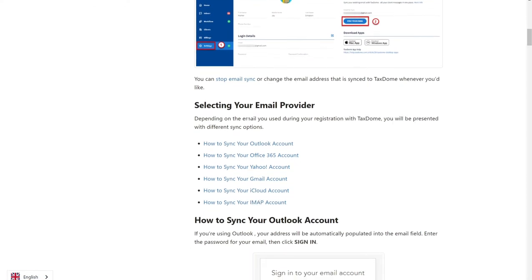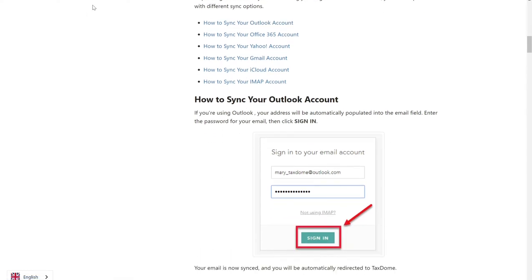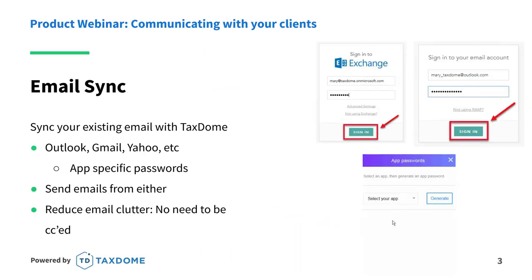We have a great help article covering everything you need to get this set up — it's quite easy, but if you need help just reach out to our team. On the right side of your screen is what you see once you click Settings, then Sync Your Email — simply enter your password and you're on your way. If you use Outlook with two-factor authentication, you'll need to set up an app password, but the email sync article walks you through everything.